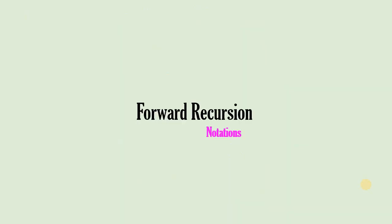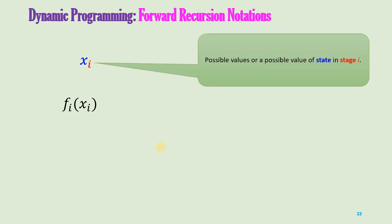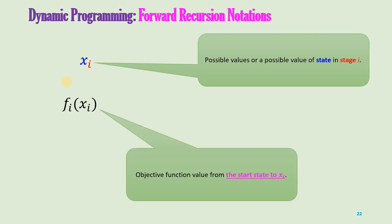Now let us look at some of the notations of the forward recursion method. In forward recursion we have two notations: x_i and f_i(x_i). x_i represents a possible value of the state in stage i, where i is the stage number and x takes the possible state values. f_i(x_i) is the objective function value from the start state to x_i. For example, in our previous instances the start state was node O, so f_i(x_i) is the objective function value from node O up to state x_i.